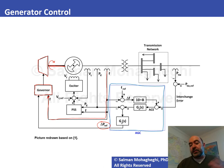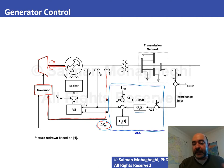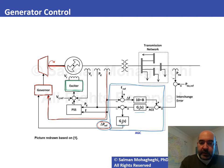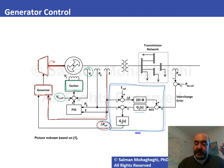AGC is a topic for future lectures. At a high level, the error in frequency and error in tie-line power collectively generate an error signal used through controllers to produce Δ P_ref. The excitation system monitors terminal voltage, compares it with the reference (typically 1 per unit), and feeds the difference as an error to the excitation system, forcing the field voltage up or down to keep V_T at one per unit.